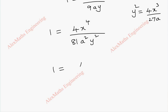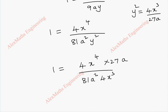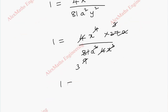After substitution, we get 1 = 4x⁴/81a² · (27a/4x³). Canceling the 4s and the x³ and the 27a, this simplifies to 1 = x/3a. Therefore, x = 3a.